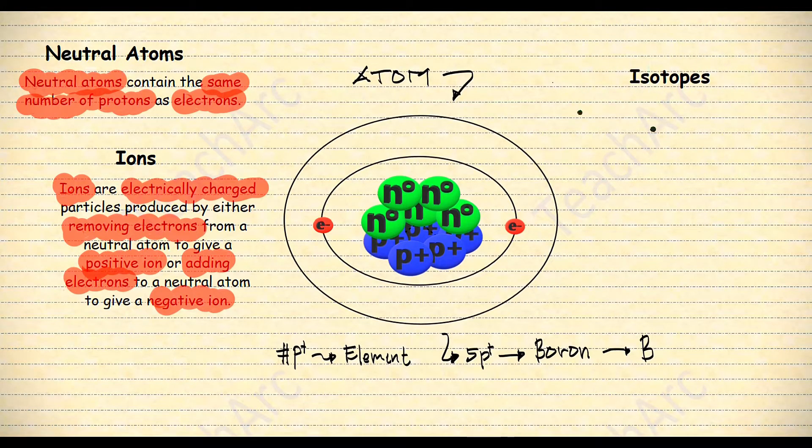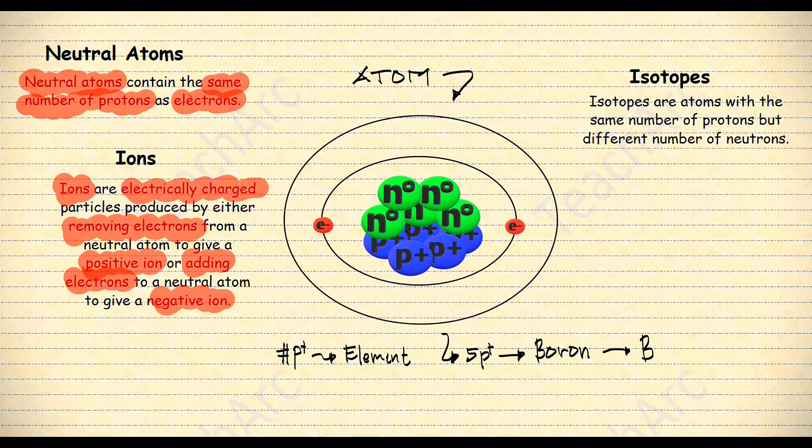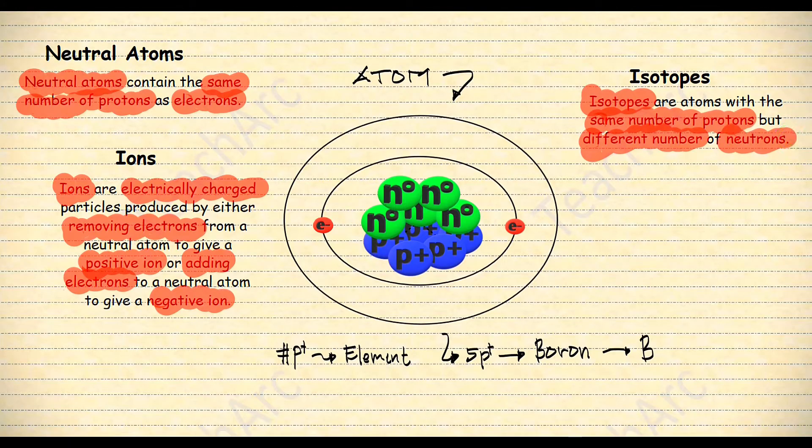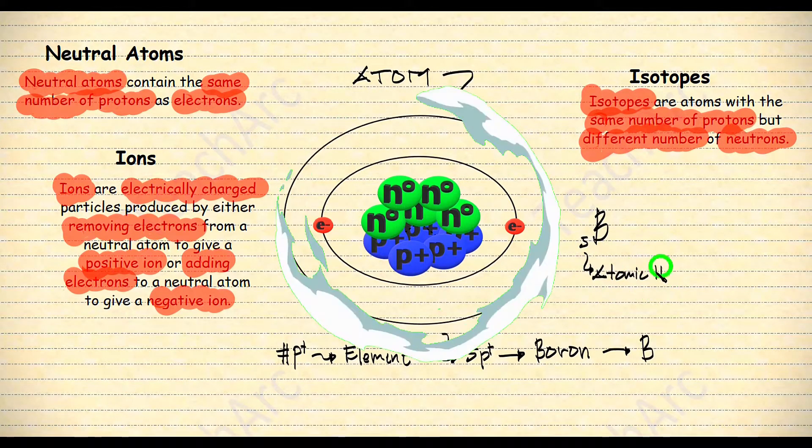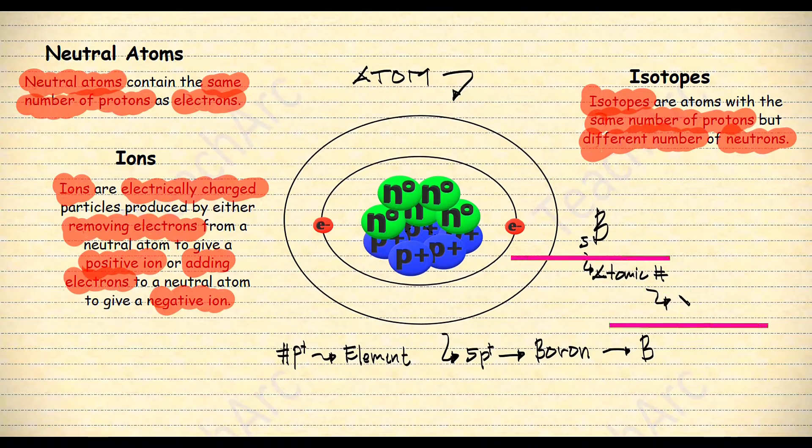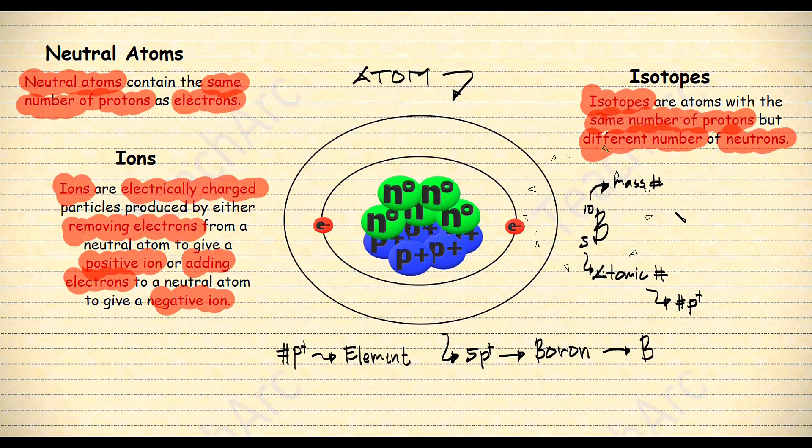Now what are isotopes? Isotopes are atoms with the same number of protons but different number of neutrons. Ignoring the charges for now, our boron right here has an atomic number of five, which is also the number of protons. It has a mass number of 10. There is another boron that we know with a mass number of 11.